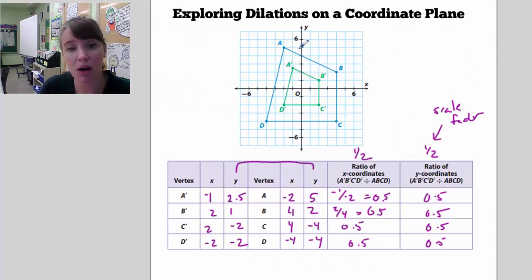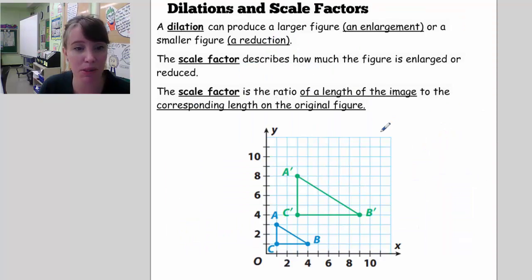So in the last problem, the figure, the pre-image, the quadrilateral ABCD, had been reduced by half to get the image of A prime, B prime, C prime, D prime. And so the scale factor describes how much the figure has been enlarged or reduced. And the scale factor is the length of the image divided by the length of the original figure.